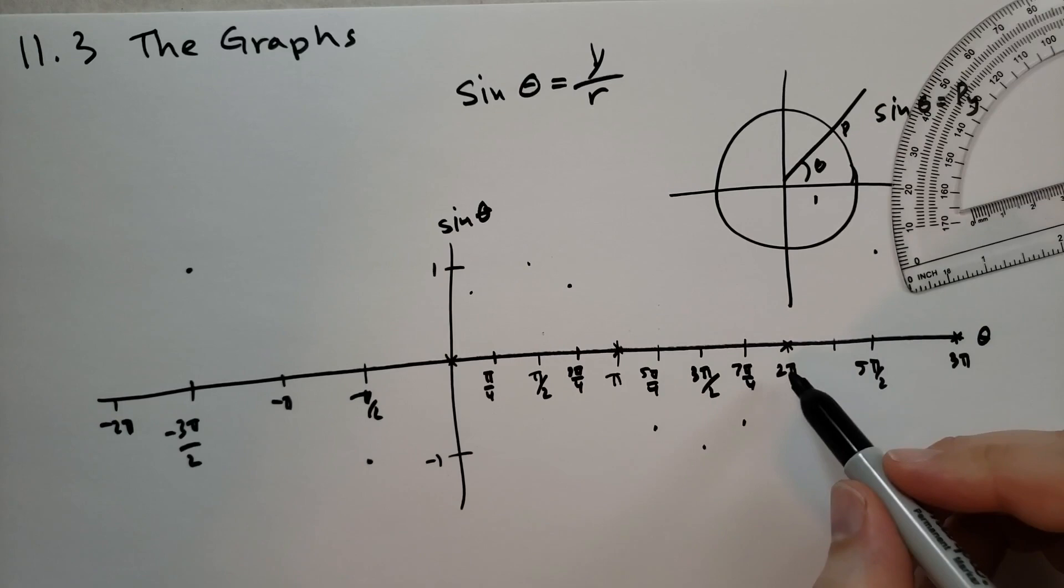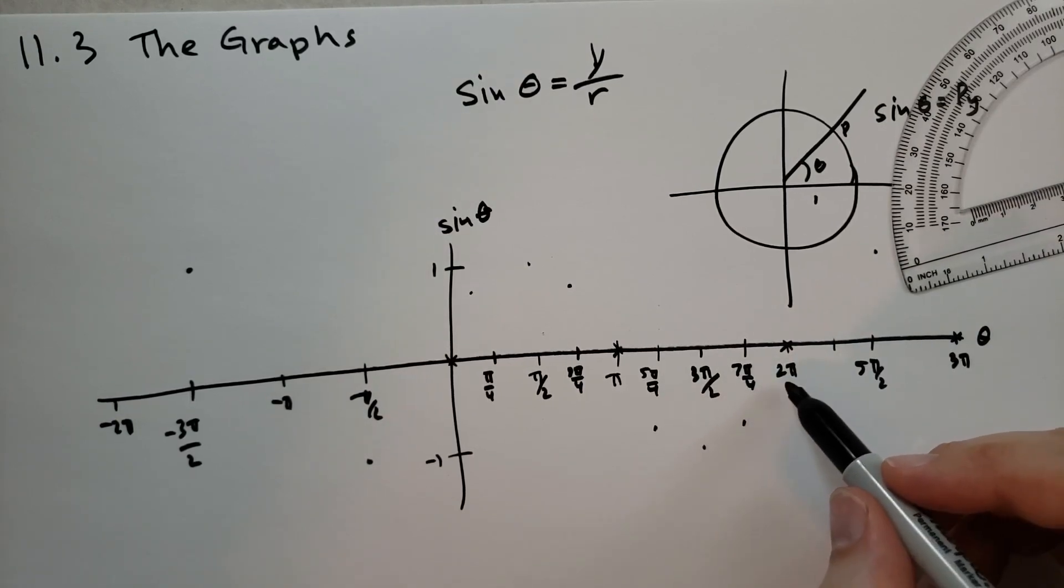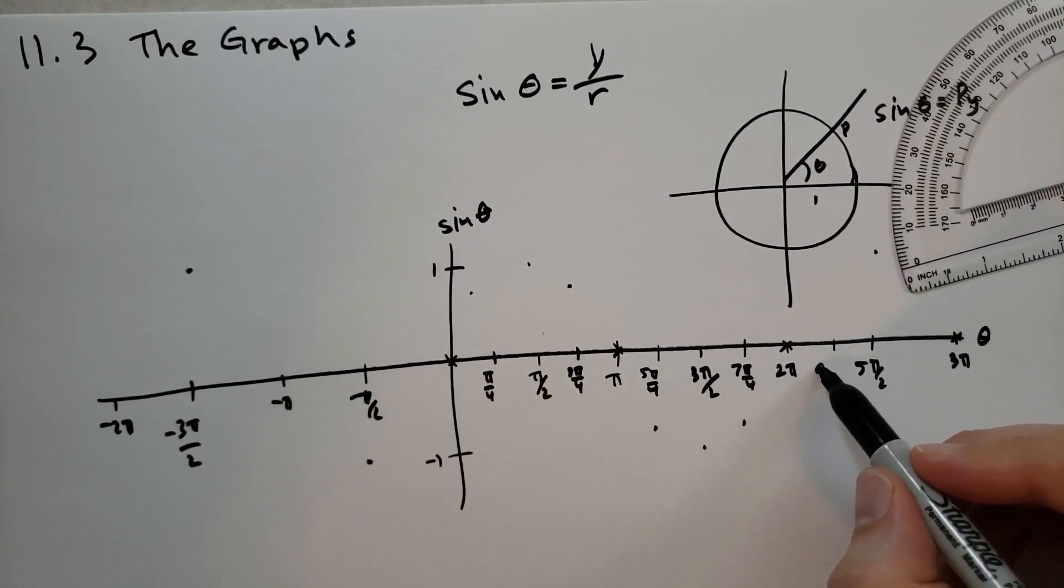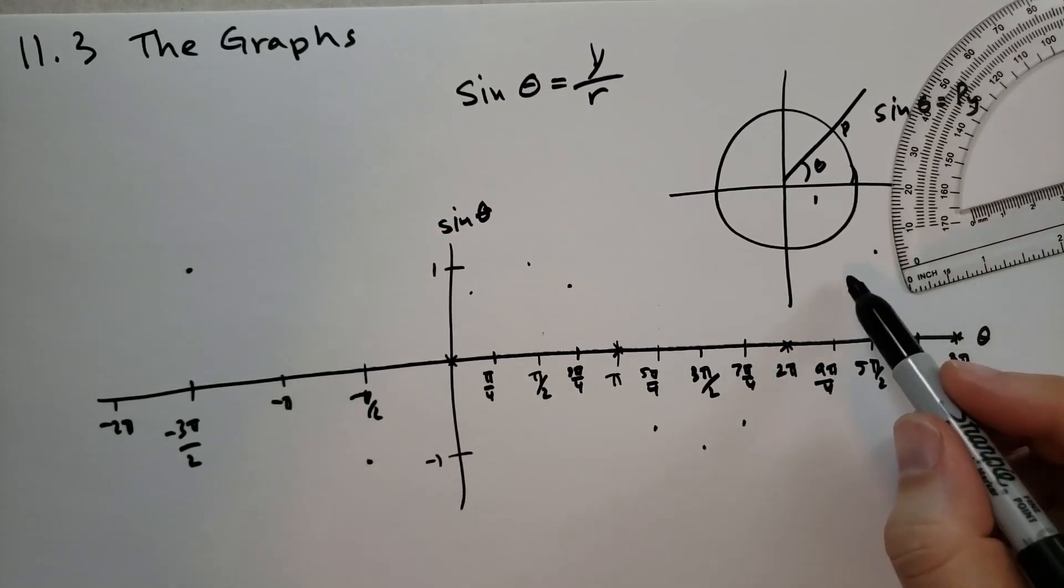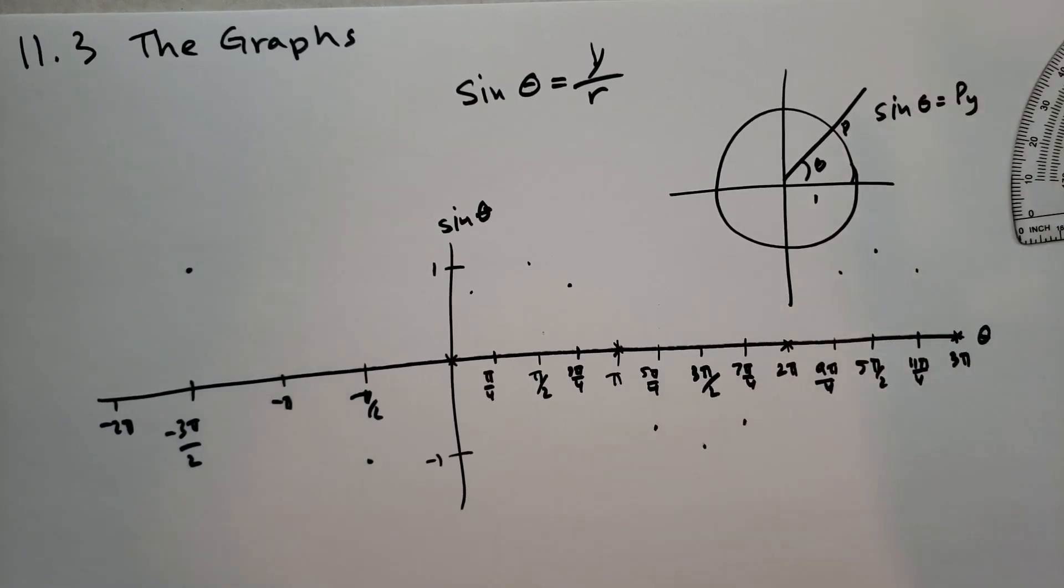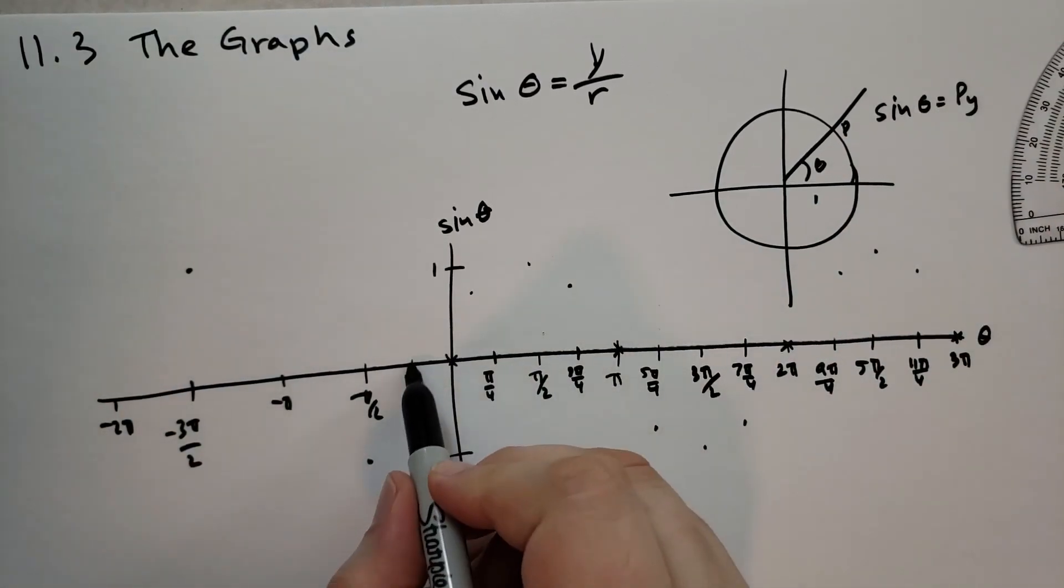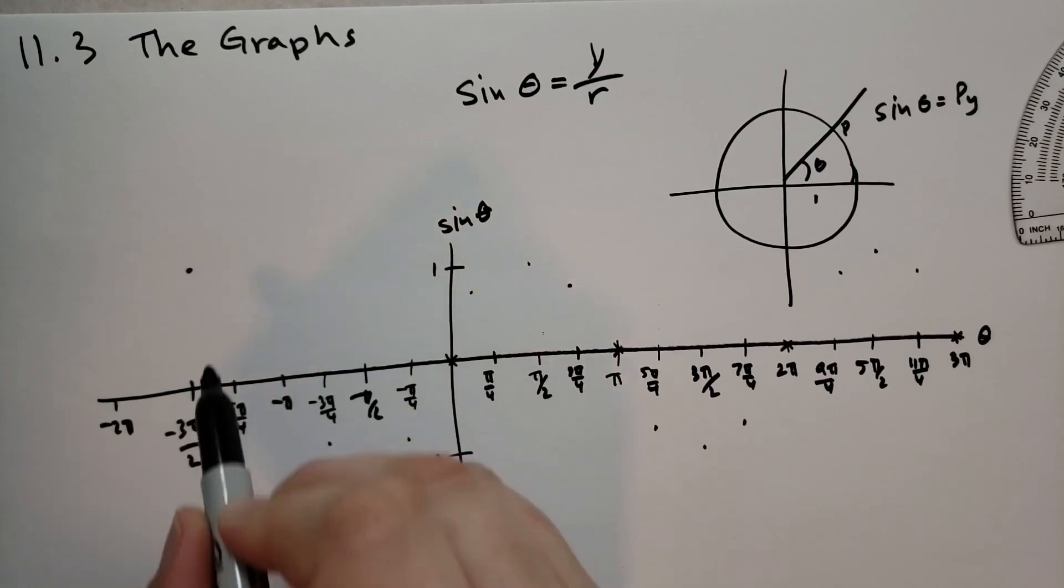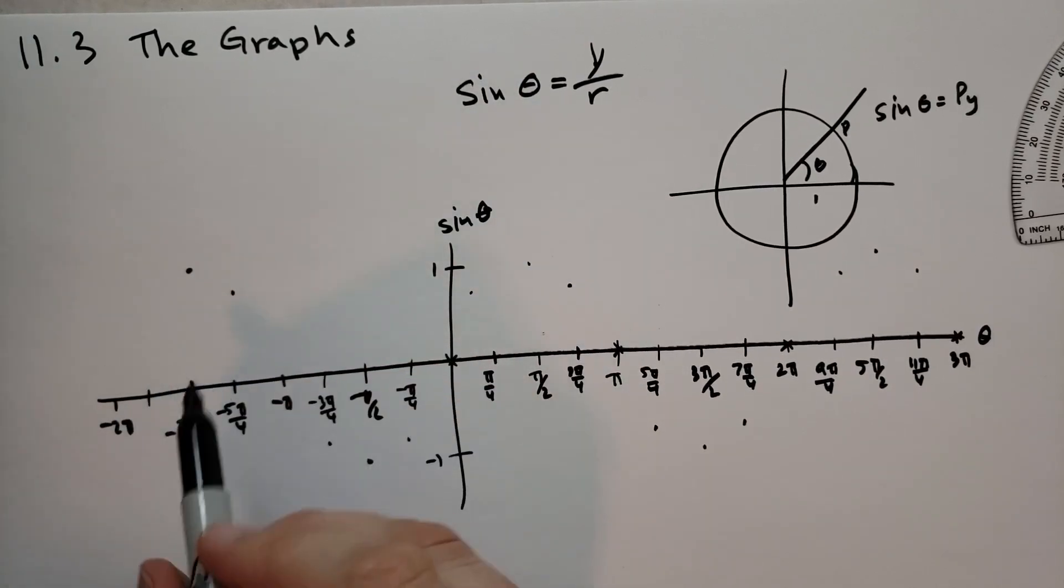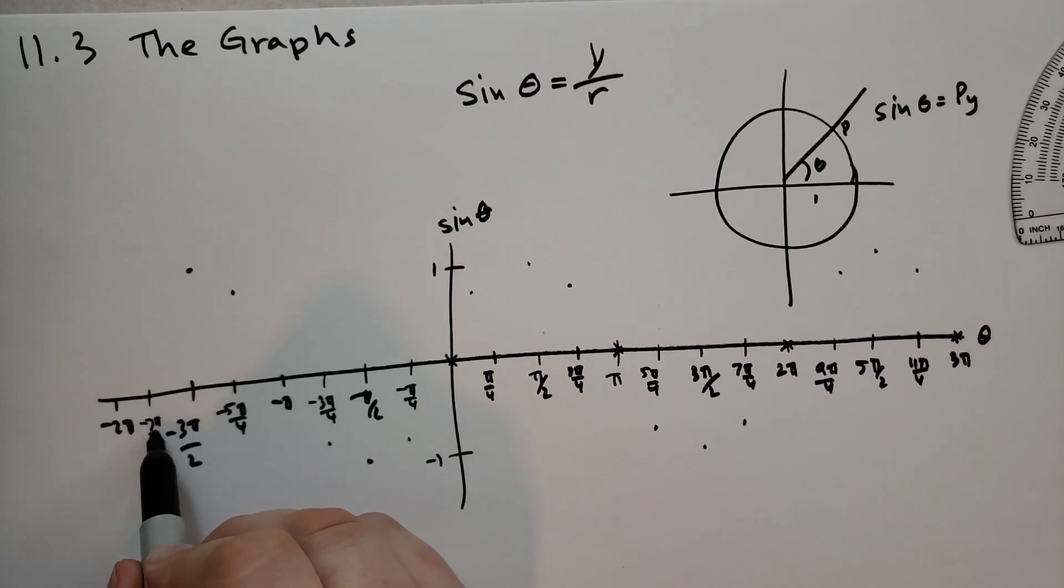And same thing over here, that would be 8 pi over 4, 9 pi over 4, and 11 pi over 4. This is also going to be at 0.7. Same kind of story over here. We have minus pi over 4, that's going to be minus 0.7. And then minus 3 pi over 4, that's going to be minus 0.7. And we have minus 5 pi over 4, that's going to be plus 0.7. And then minus 7 pi over 4, that's going to be 0.7.